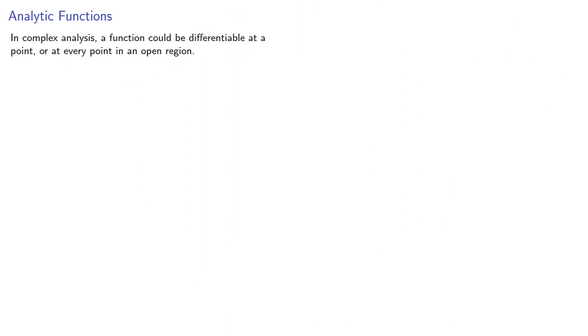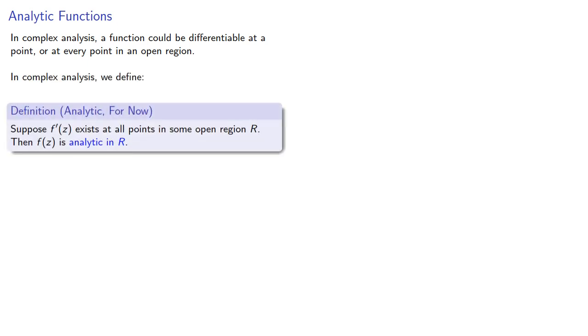In complex analysis, a function could be differentiable at a point, or at every point in an open region. And so we define the following: Suppose the derivative of a function exists at all points in some open region R. Then the function is analytic in R.